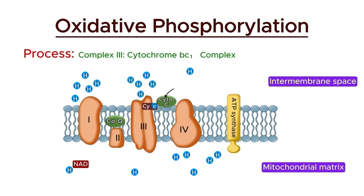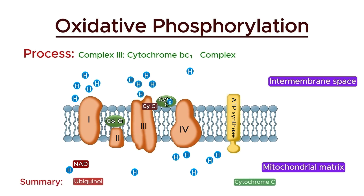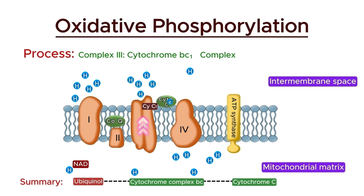Cytochrome C, a small heme protein, then accepts electrons from complex 3 and carries them to complex 4. To summarize the third stage: electrons transfer from ubiquinone to cytochrome C through the cytochrome BC1 complex. This process results in the pumping of four protons from the matrix to the intermembrane space, enhancing the proton gradient.